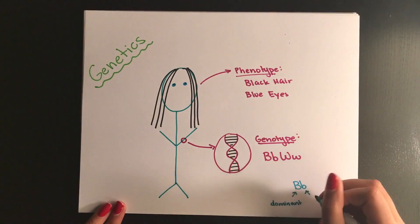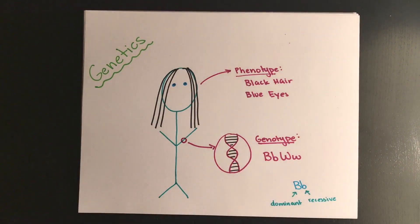So if something is dominant to something else, that is the trait that will be expressed. Dominant traits are also typically represented by a capital letter while recessives are lowercase.